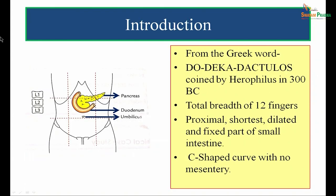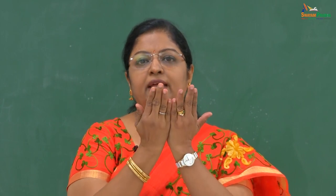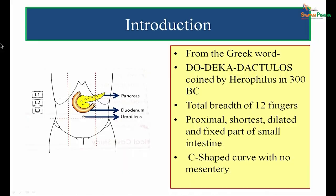Duodenum is derived from the Greek word 'do-deca-dactylos,' coined in 300 BC by Herophilus. 'Do' means 2, 'deca' means 10, and 'dactylos' means fingers. So do-deca-dactylos means the length of the duodenum is equal to the total breadth of 12 fingers, which is about 25 centimeters or 10 inches.